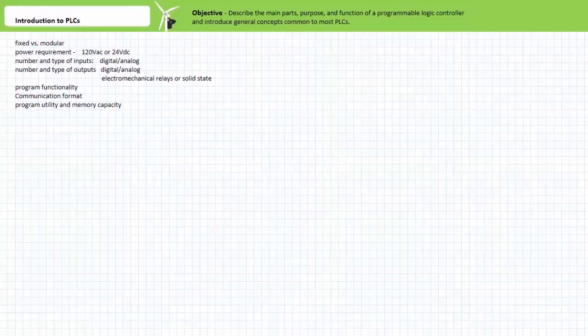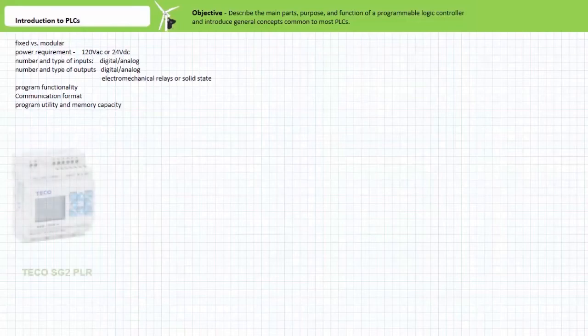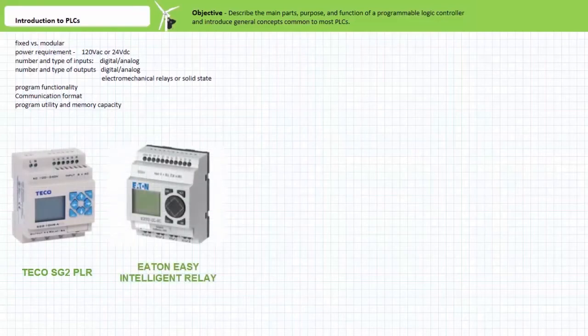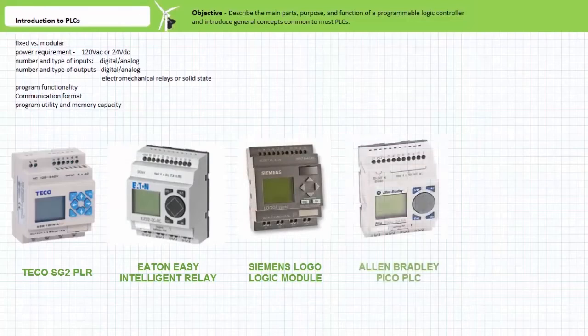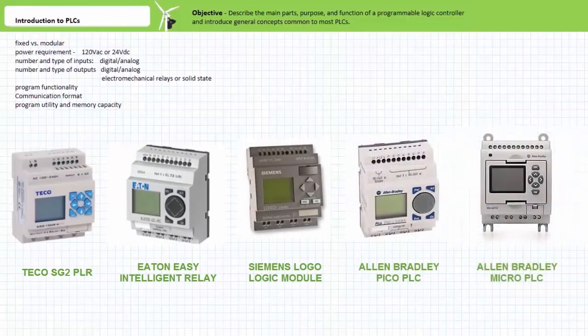These devices are known alternatively as programmable logic relays or PLRs, intelligent relays, smart relays, logic modules, or other manufacturer specific terminology. Examples of small-sized basic fixed PLCs include the TECO SG2 PLR, the easy intelligent relay family, Siemens Logo logic modules, and the Allen-Bradley PECO or micro programmable logic controllers.